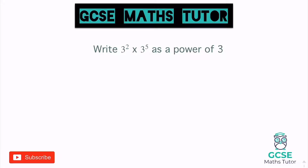Right, so we're going to have a look at the laws of indices. Again, there's a few of these to have a look at. So grab a piece of paper, grab a pen, make some notes, and we're going to go over these first three. So write three squared times three to the power of five as a power of three. So when we're looking at indices here, there's three different ones we're going to have a look at to start with.